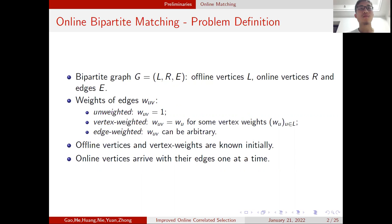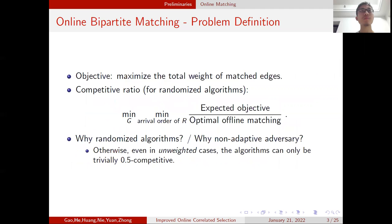For all settings, the offline vertices and vertex weights are known initially, while online vertices arrive one at a time with their edges. The algorithm must irrevocably decide which offline vertex the online vertex matches to, or leave it unmatched, immediately upon arrival. The objective is to maximize total weight of matched edges, and the competitive ratio is the expected objective over the optimal offline matching in hindsight, minimized over all possible graphs and arrival orders.